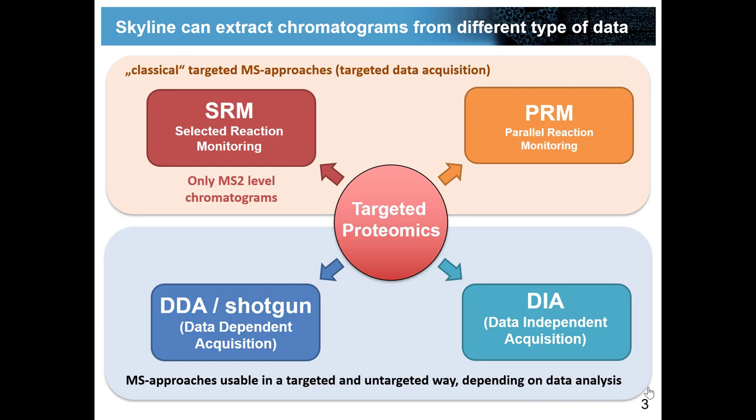In SRM, when you load SRM data, Skyline will only be able to show you fragment ion chromatograms because that's the only type of data acquired in SRM. While in PRM, if you have included full MS-1 scans in your data acquisition method, Skyline will be able to show you both MS-1 and MS-2 level precursor chromatograms and fragment ion chromatograms.